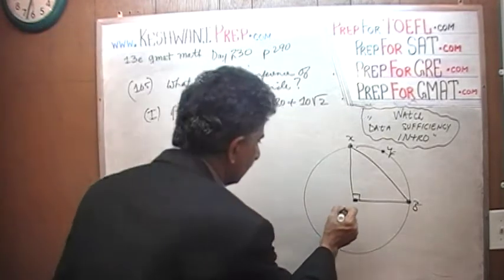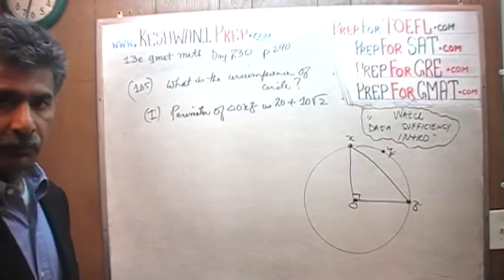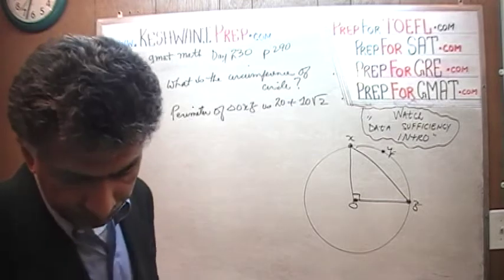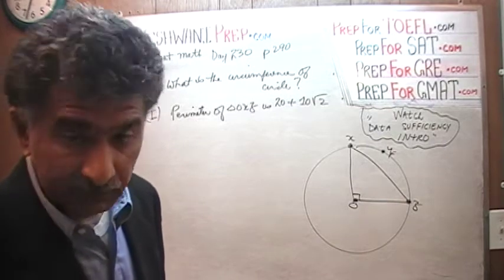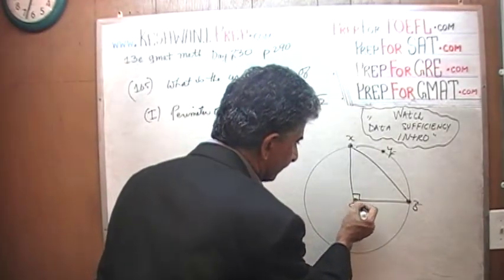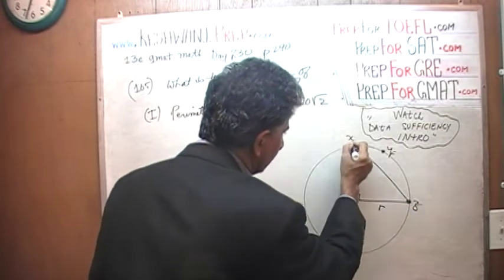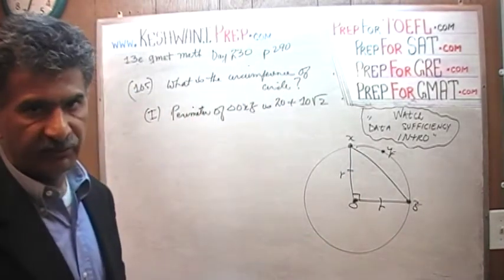The perimeter of O, X, Z we are told is this. Now what we have to understand is that because of the way it is drawn here, it is sitting at the center. It says what is the circumference of the circle above with the center O. You see, this is the center. Because it is sitting at the center, this distance from O to Z is the radius which is the same distance from O to X. It is the radius. Therefore these two sides are equal. Then what do we know about an isosceles triangle?